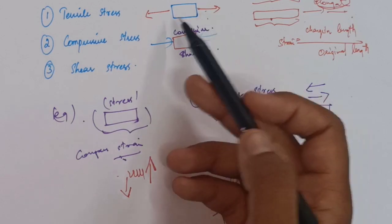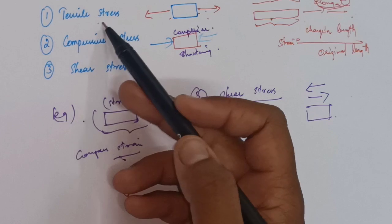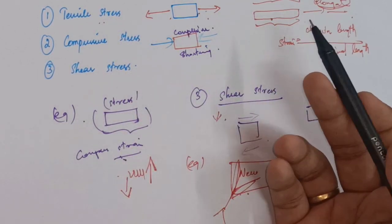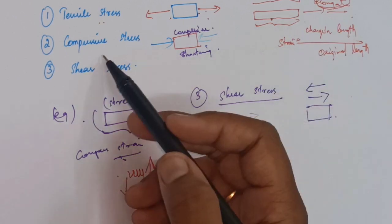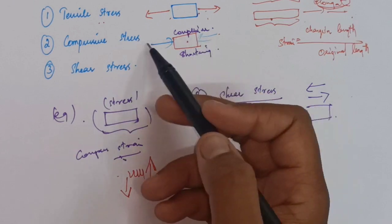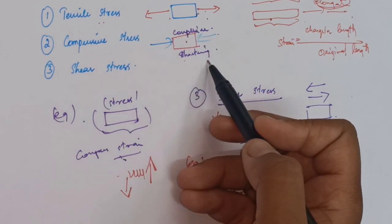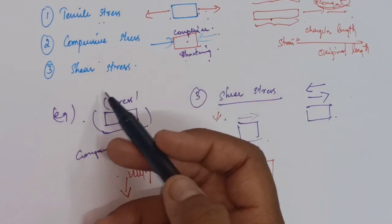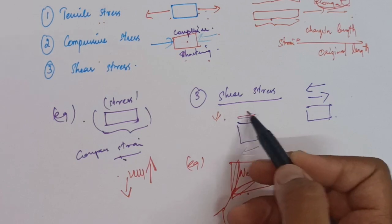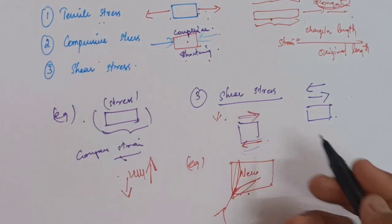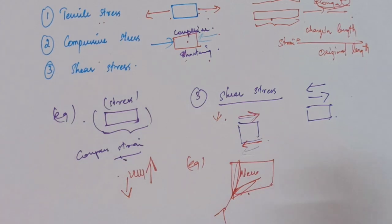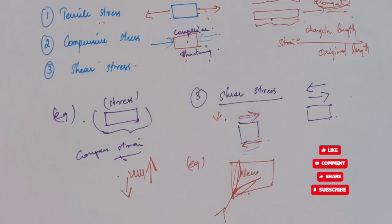Tensile stress occurs when a body is subjected to two sets of forces away from each other in the same straight line, tending to stretch or elongate the body. Compressive stress is when a body is subjected to two sets of forces towards each other, resulting in compressing or shortening of the body. Shear stress is when two sets of forces are directed parallel to each other, resulting in twisting or sliding motion. This is an important exam question in your dental materials subject, so concentrate on it. If you have any doubts, please comment below. Thank you for watching — please subscribe and click the like button.